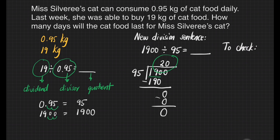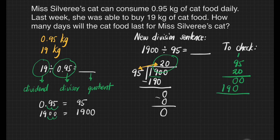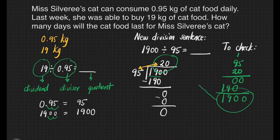To check our answer, we have to multiply 20 and 95 — it has to have 1,900 as the product. That's 95 times 20. 0 times 5 is 0, 0 times 9 is 0, 2 times 5 is 10, write 0, carry 1, 9 times 2 is 18 plus 1 is 19. Adding the partial products gives us 1,900, which is equivalent to our dividend. That makes our answer 20 days correct. It means Miss Silvery's cat can consume the 19 kilograms of cat food in 20 days.